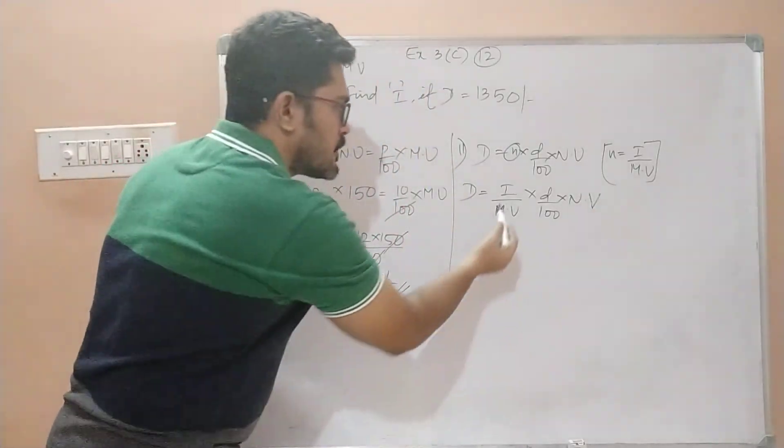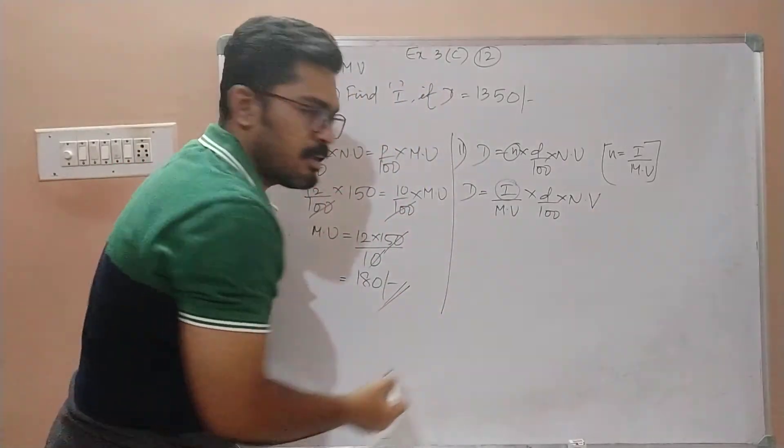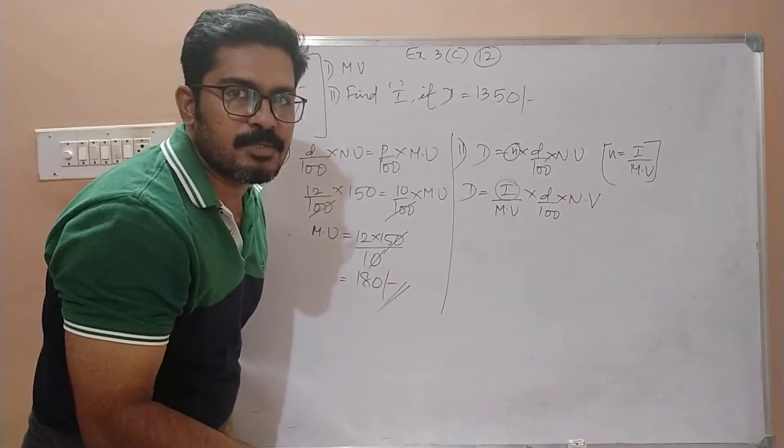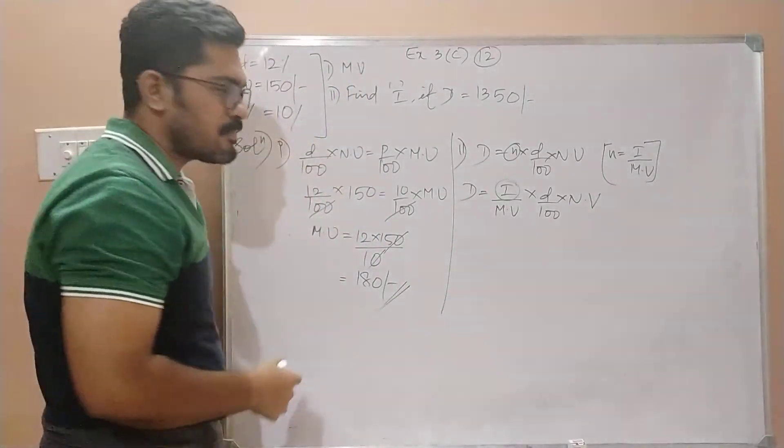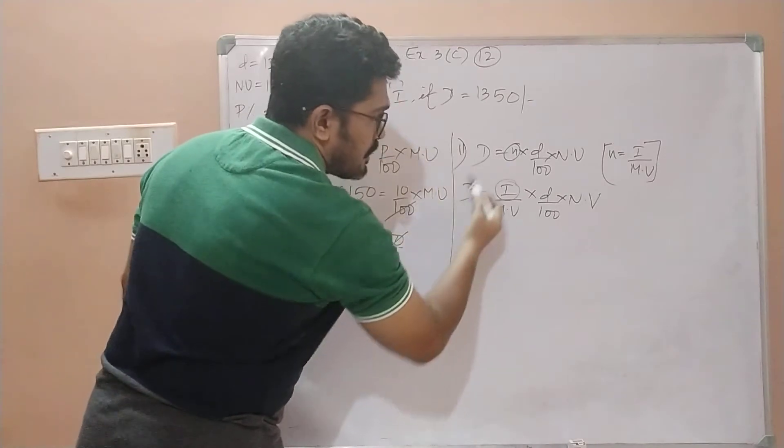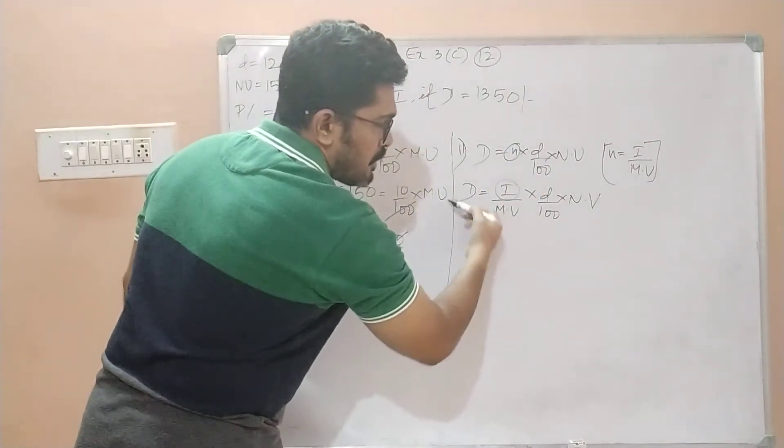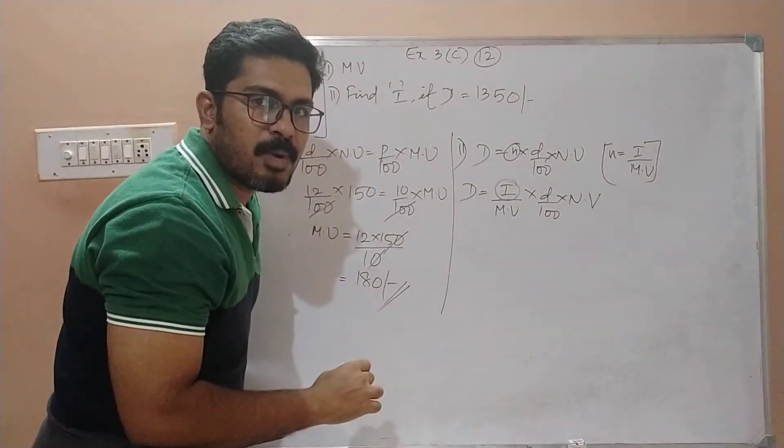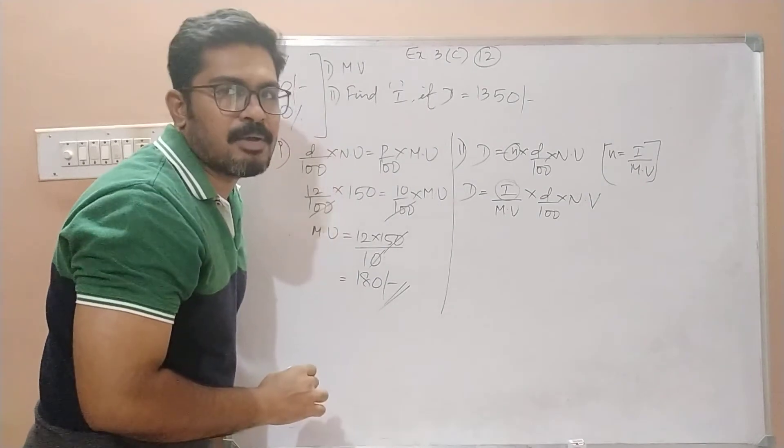Now why did I do so? Because I need to find i, and mv is also given to us in the question. So why don't we just replace n with i by mv, then substitute the available values and find the value of i.